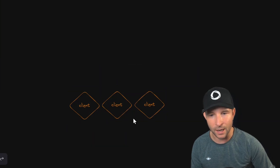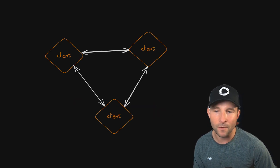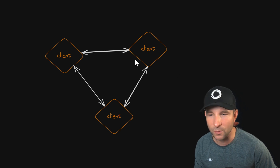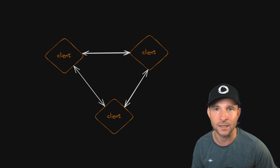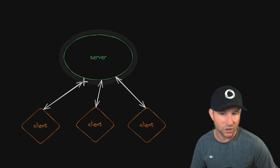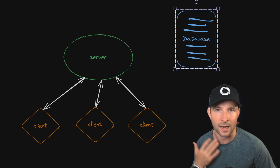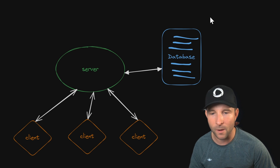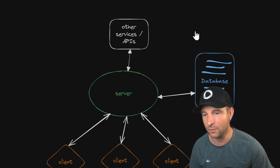Before I dive too far into the details, I think it's important to take a high-level view of what makes up an app in 2025. We start off with our clients, which is what your users are generally going to interact with in your application. Beyond very simple applications, you're going to need a way to share data between those clients. You could do that peer-to-peer, but that's going to be limited in the types of applications you can build. Generally, you're going to want a server in the middle that mediates access to the database and allows you to share data between different clients. And we're probably going to want to access some third-party services like AI, email, or payments.